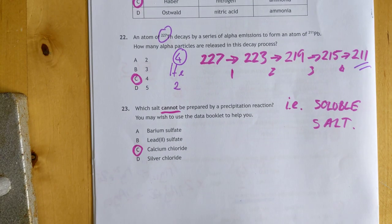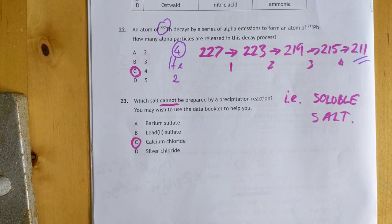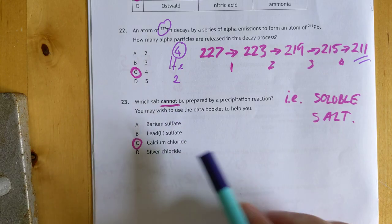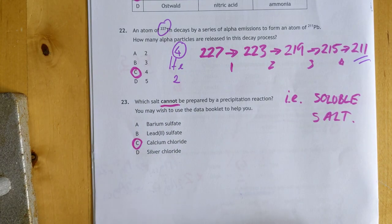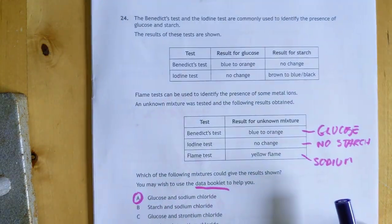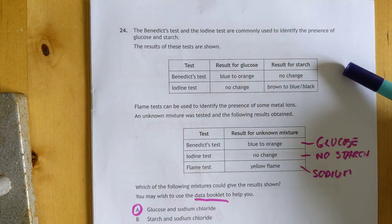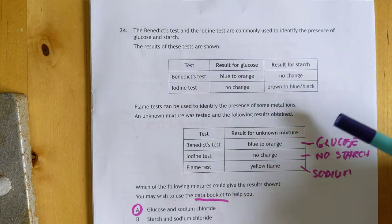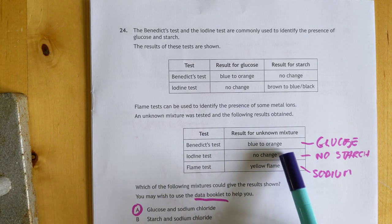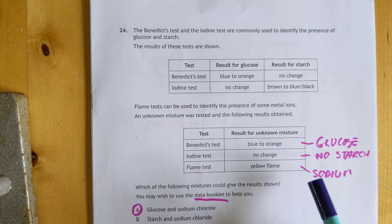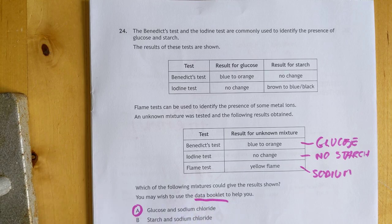My camera is still recording. Which salt cannot be made by precipitation? It's C, it's the only soluble one there. Number 24: problem solving. This used to be in the course, they took it out. The answer basically is the mixture has got glucose, no starch, and sodium in it. So it's glucose and sodium chloride. The data booklet is for the flame colors.